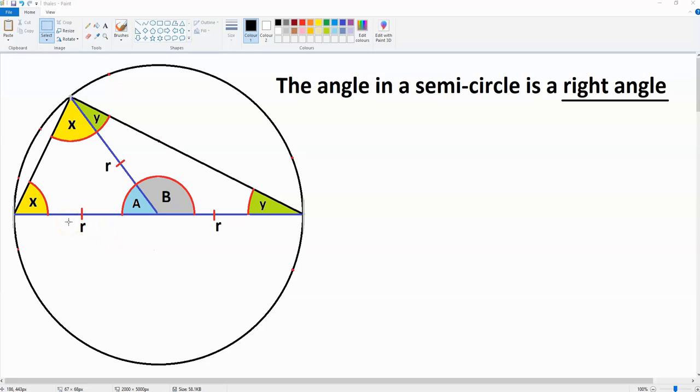Firstly, we're dealing with two isosceles triangles. That is because this length over here is r, this length is r, and also this length. r stands for radius.